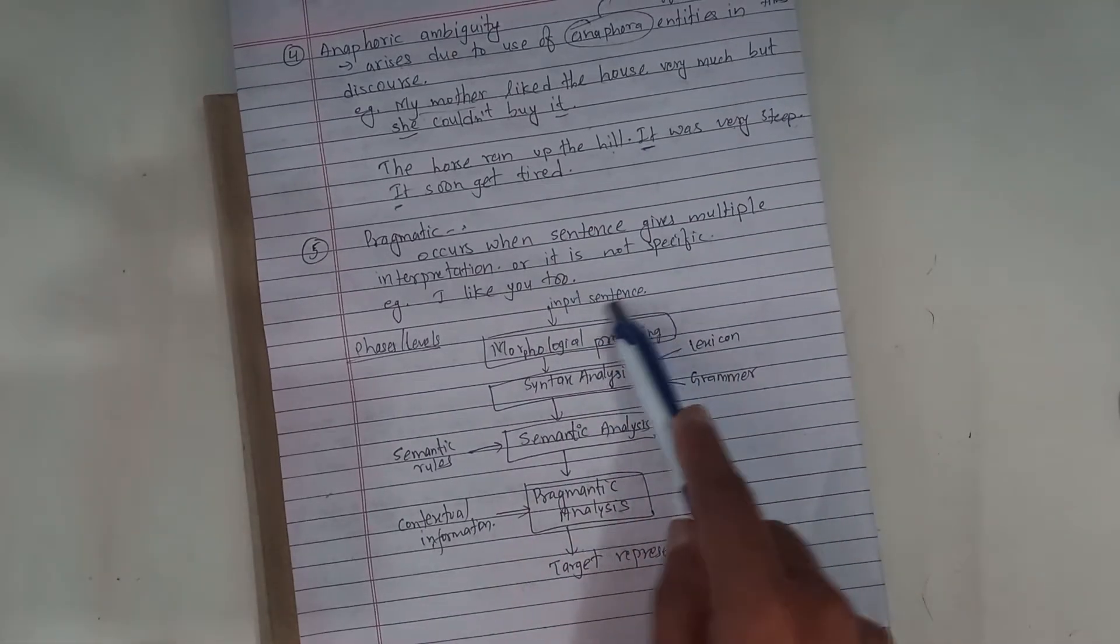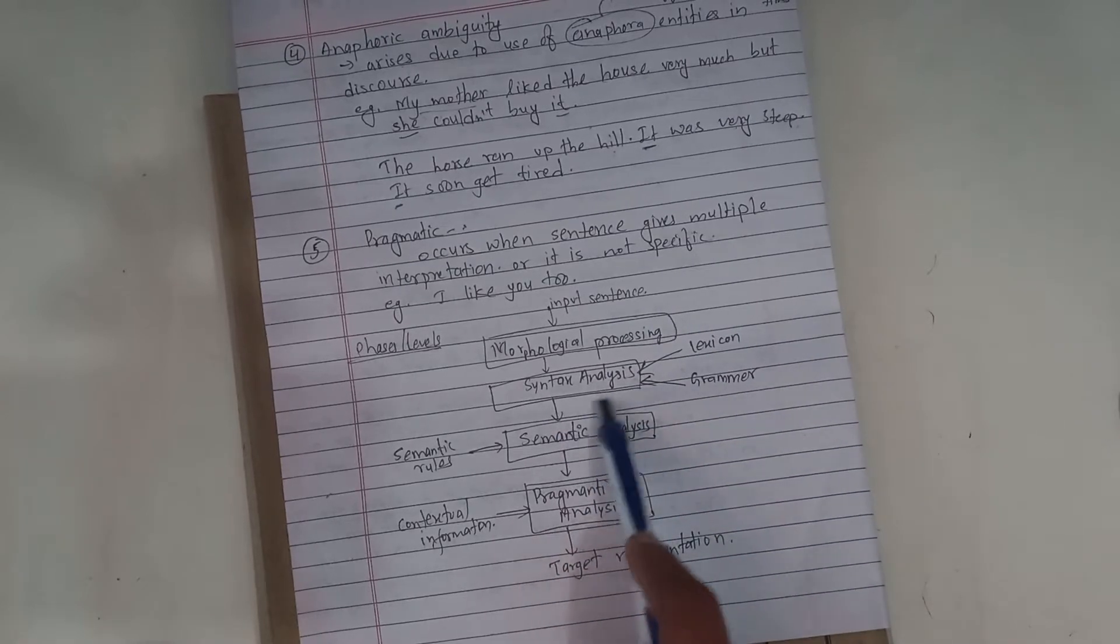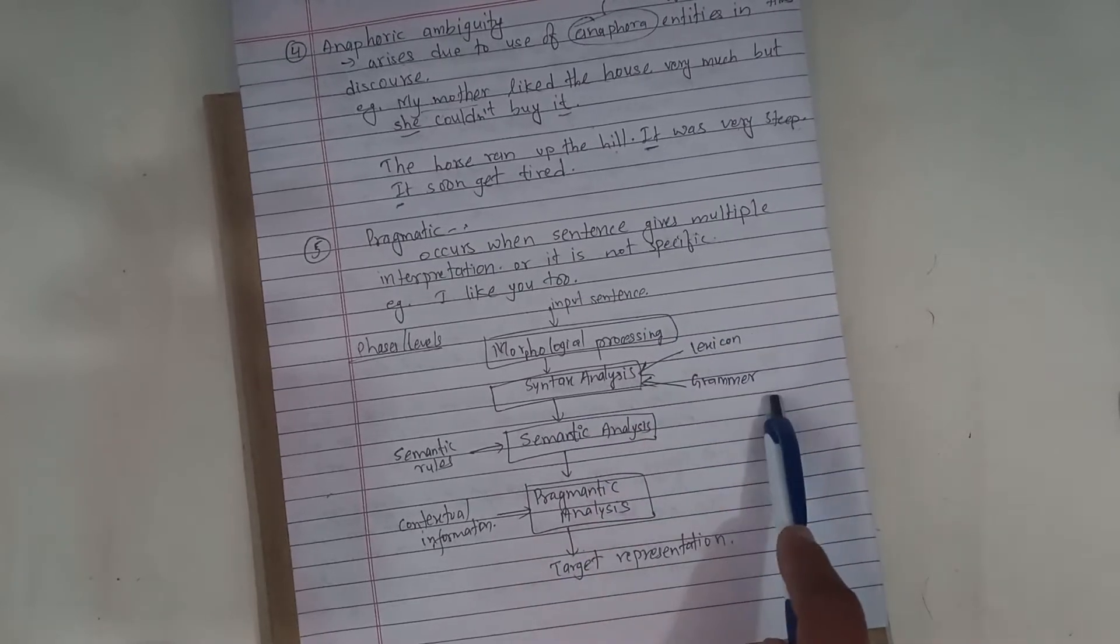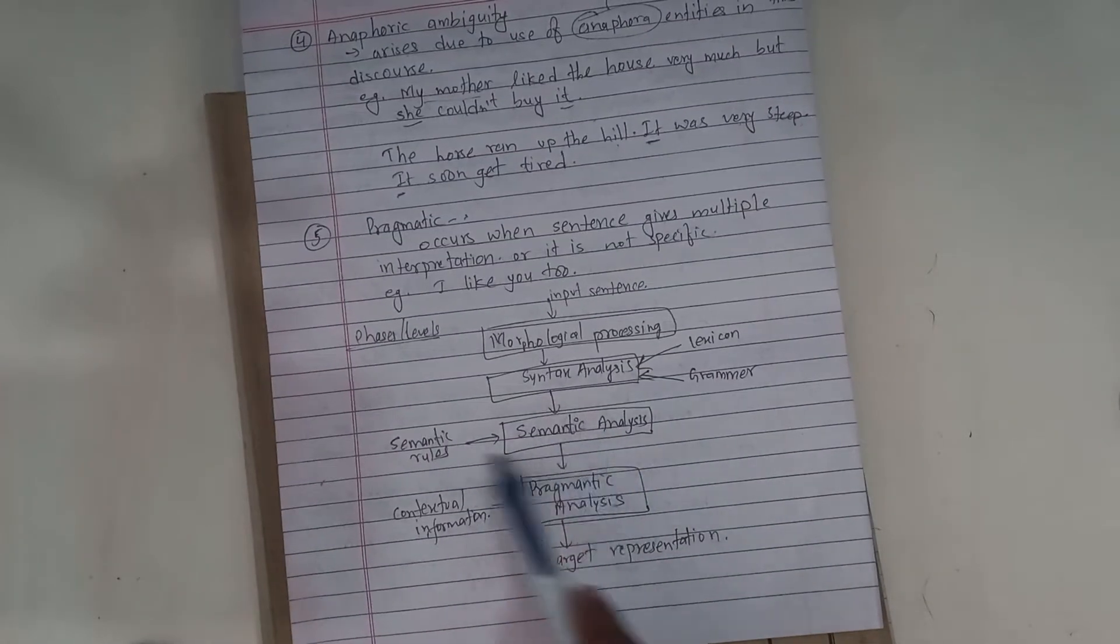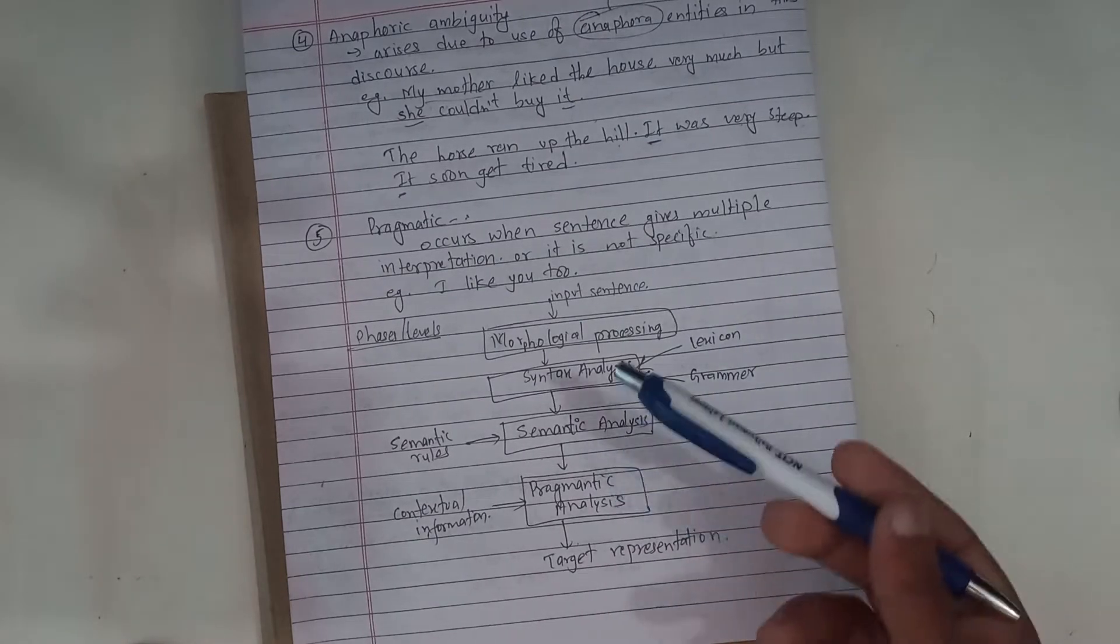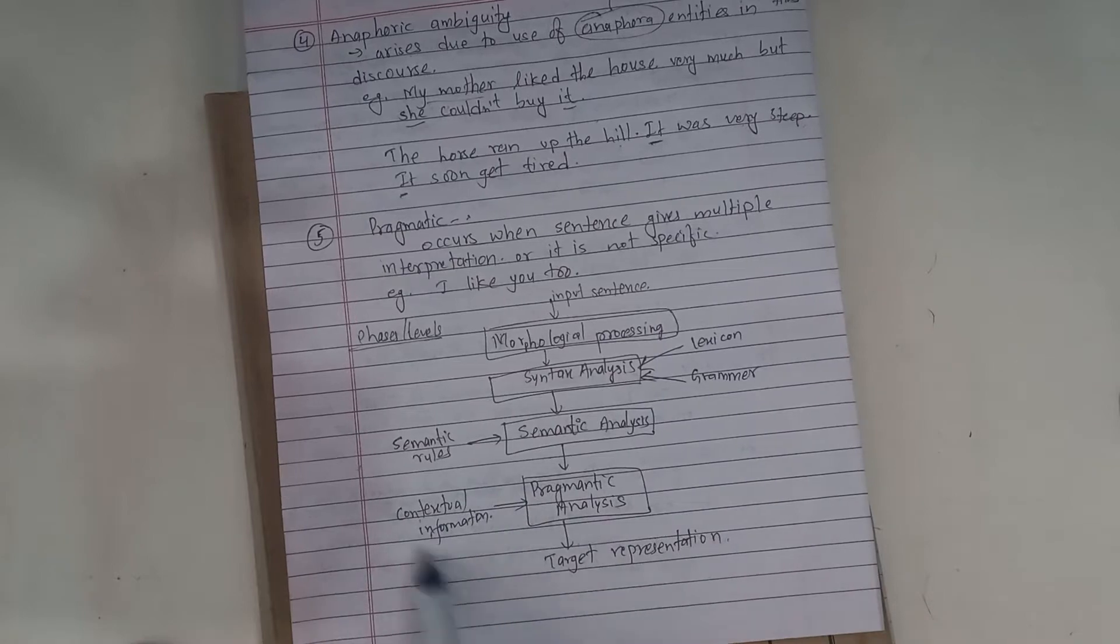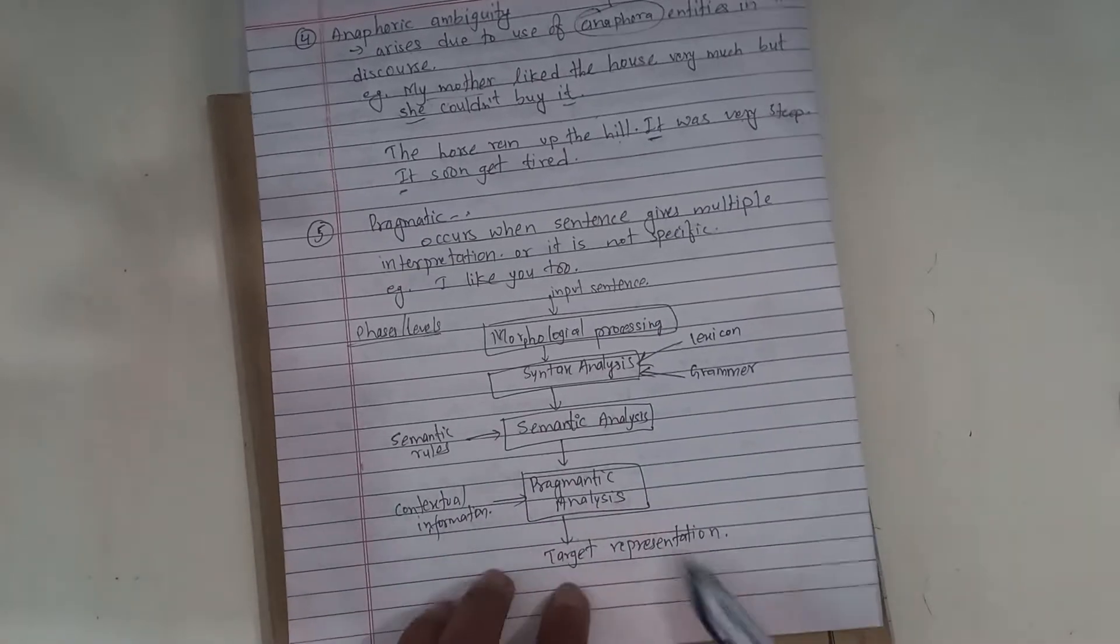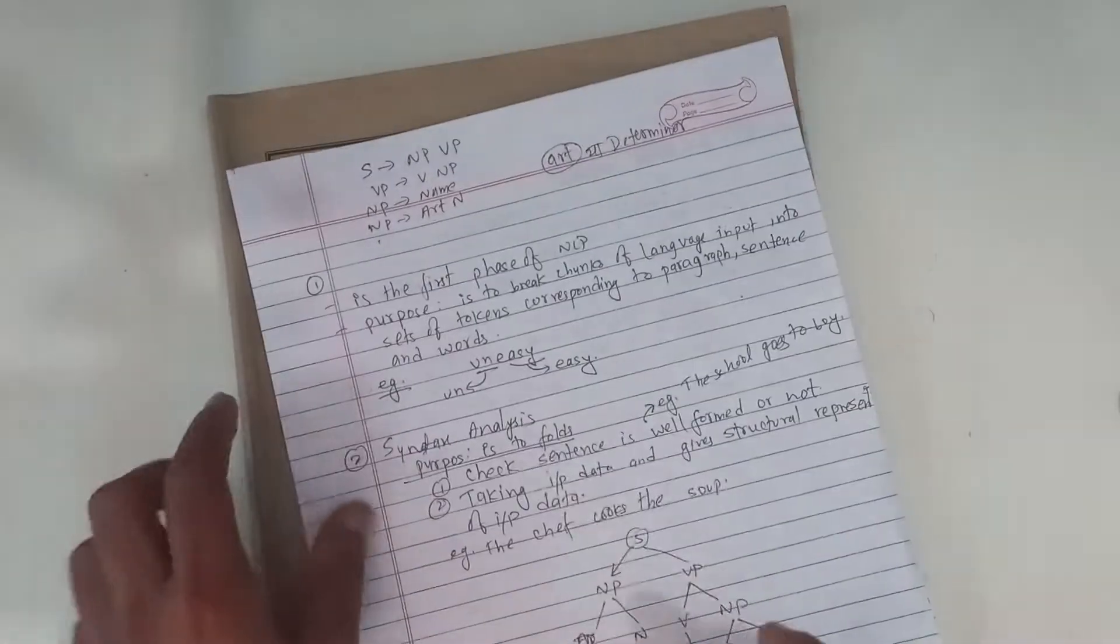So, for an input sentence: in the beginning, morphological processing and syntax analysis with lexical grammar. Then there are semantic rules, which form semantic analysis. And there's pragmatic analysis, where contextual information is provided.